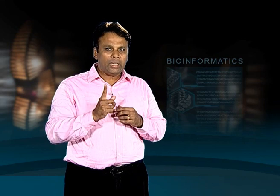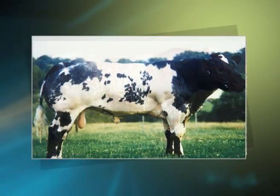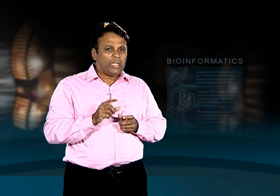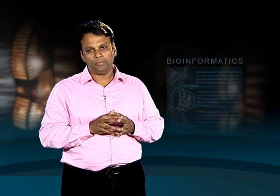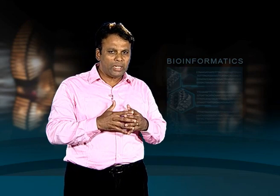Codominance implies that there is an independence of allele function. Roan is a pattern common in shorthorn cattle and Belgian Blue cattle. In roan cattle, coat colour is inherited through incomplete dominance. Roan is a coat colour found in cattle, generally defined as a mixture of red pigmented and white hairs. This is a good example of codominance.